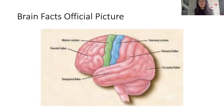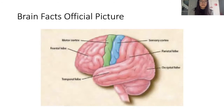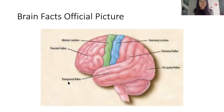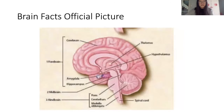This is the Brain Facts official picture showing the frontal lobe, parietal lobe, occipital lobe, and temporal lobe. Two more things to know are the sensory cortex and motor cortex. The sensory cortex takes in information from your senses — for example, if you smell something it goes to the sensory cortex. The motor cortex processes signals going from the brain to other parts of your body, controlling your movements. Basically, the sensory cortex takes things in and the motor cortex puts things out.